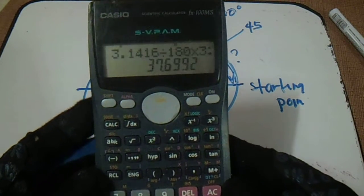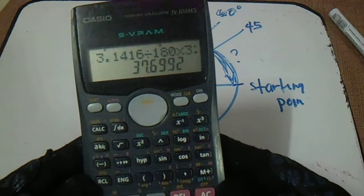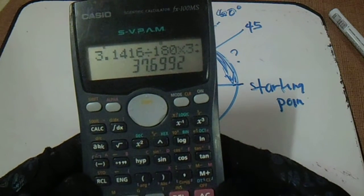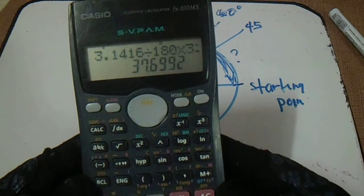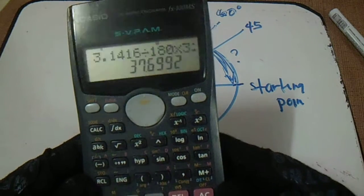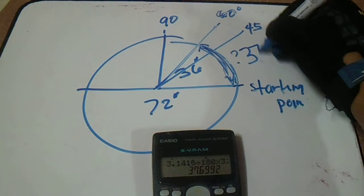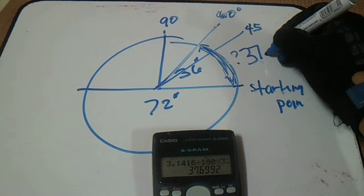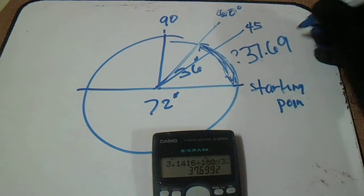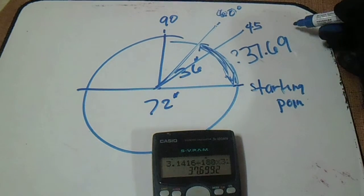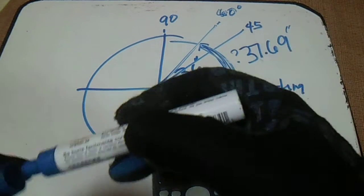So this is our arc length: 37.69. Our answer here is 37.69 inches.